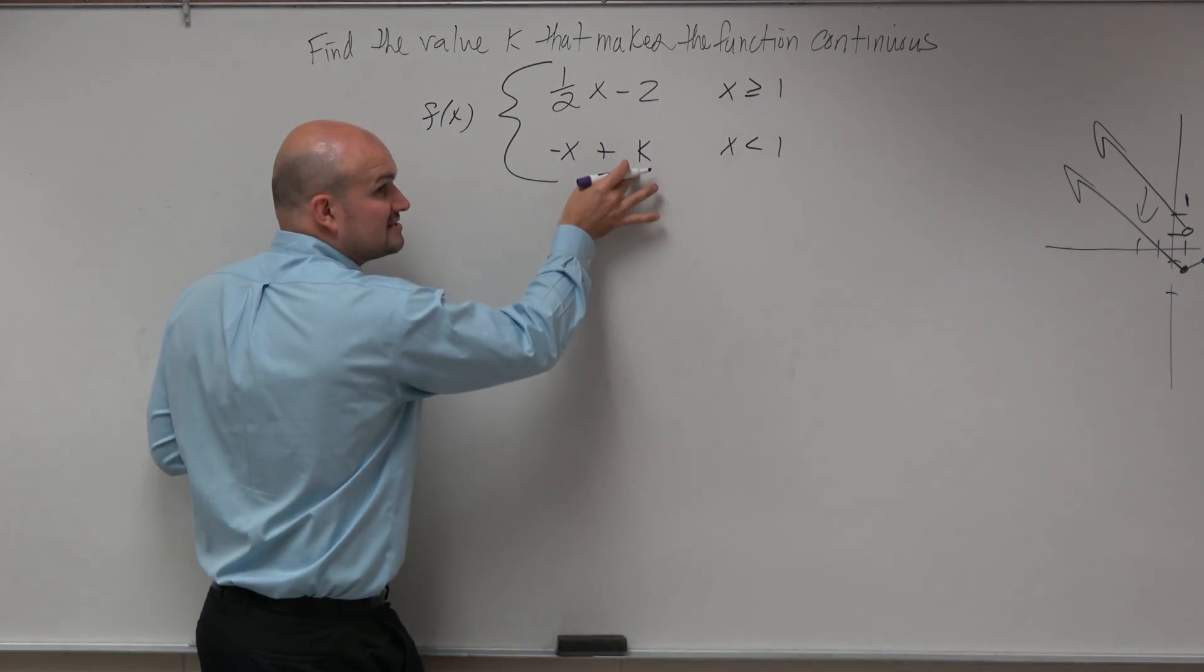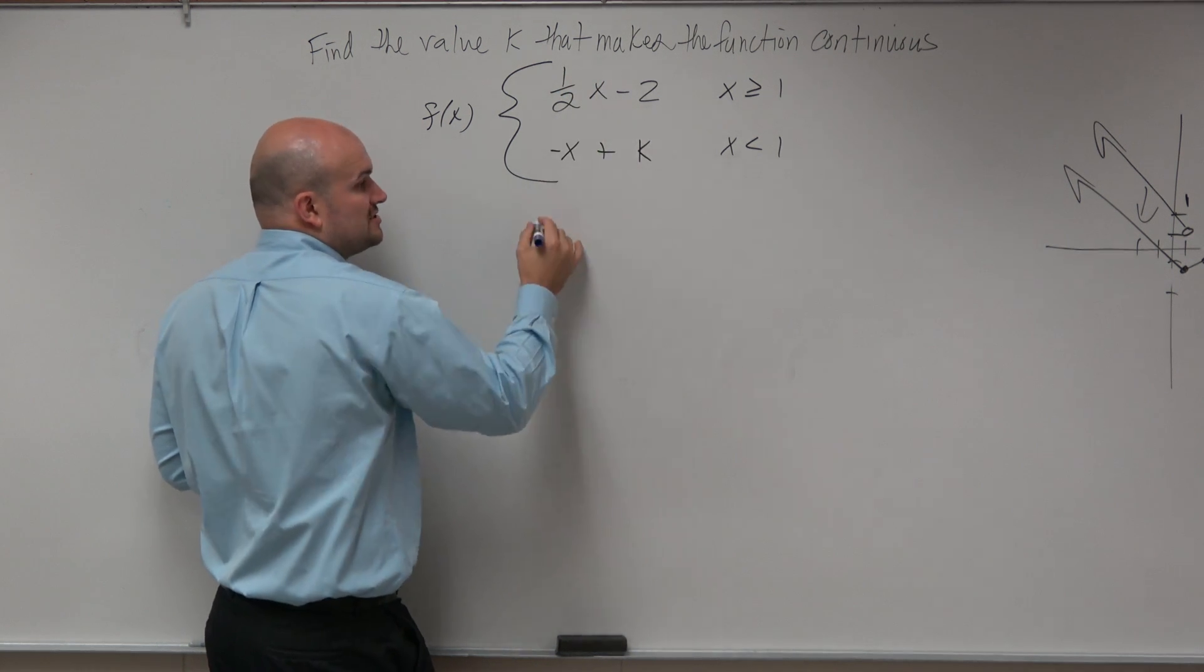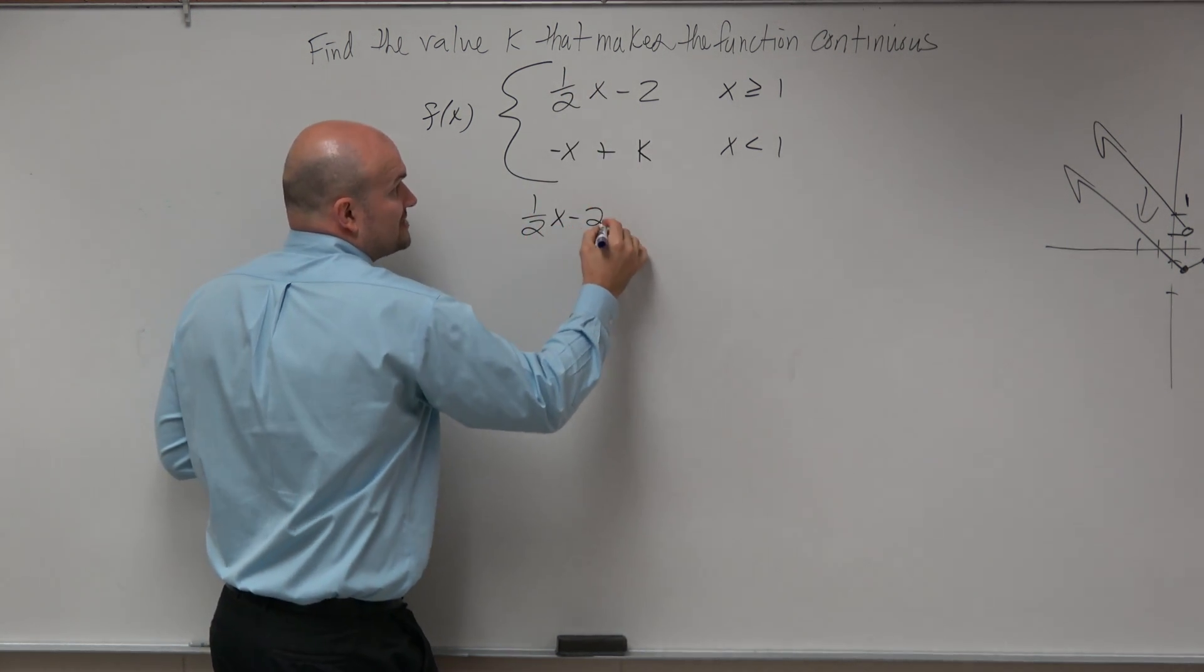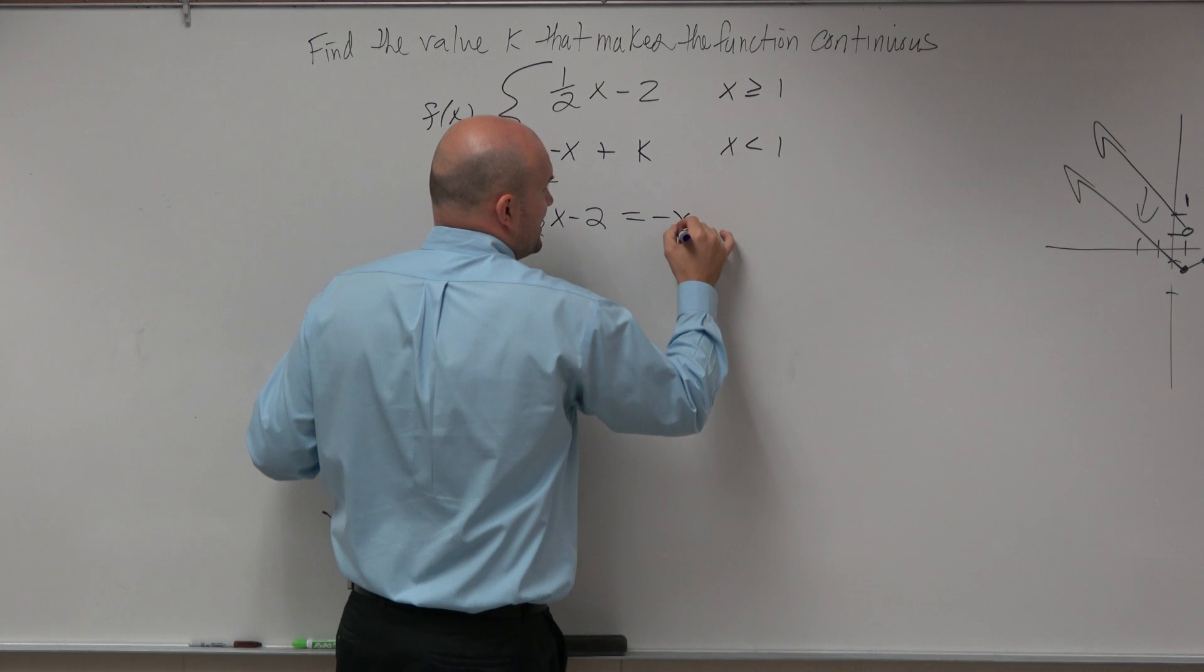So the first thing I'm going to do when we want to find this k, and again, guys, it doesn't matter what these equations are. Take 1 half x minus 2, set it equal to negative x plus k.